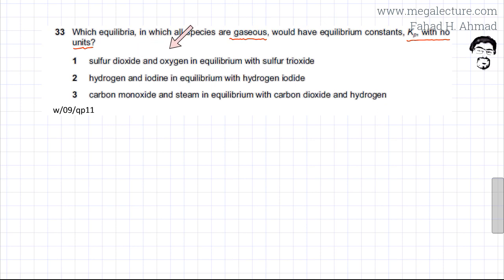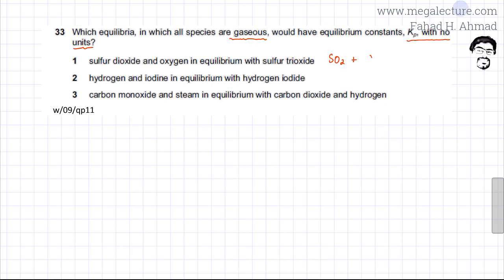The first statement involves sulfur dioxide and oxygen in equilibrium with sulfur trioxide. Writing the balanced equation: 2SO₂ + O₂ ⇌ 2SO₃.